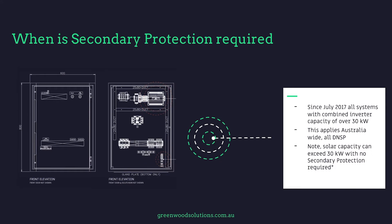Since July 2017, all systems with combined inverter capacity of over 30 kilowatts require secondary protection, and this is Australia wide — so all DNSPs. Note that solar capacity can exceed 30 kilowatts with no secondary protection required, as long as the AC is below that point. Remember, grid protection is secondary protection. The primary protection is effectively one of the functionalities of the inverters that you've installed. The secondary protection is there because the distributors have decided that their infrastructure needs further protection.